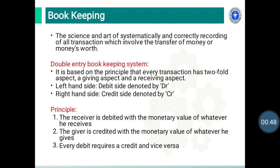The double entry bookkeeping system is based on the principle that every transaction has a twofold aspect — a giving aspect and a receiving aspect. The left-hand side is denoted by DR, that is the debit side, while the right-hand side is denoted by CR, that is the credit side.